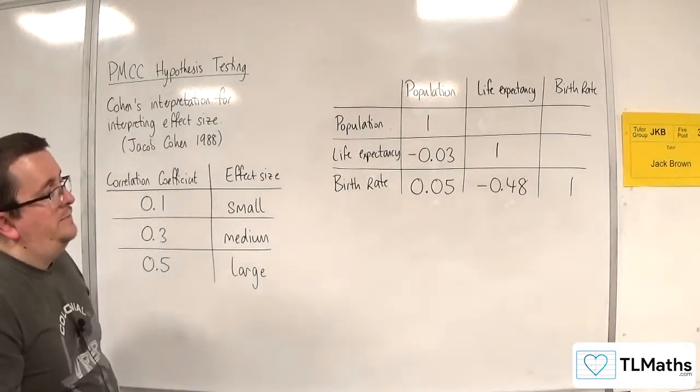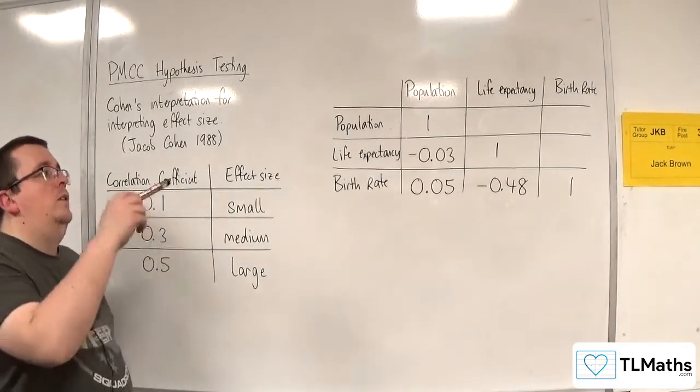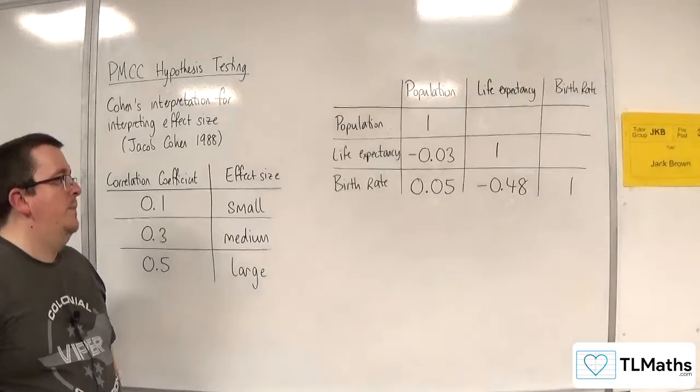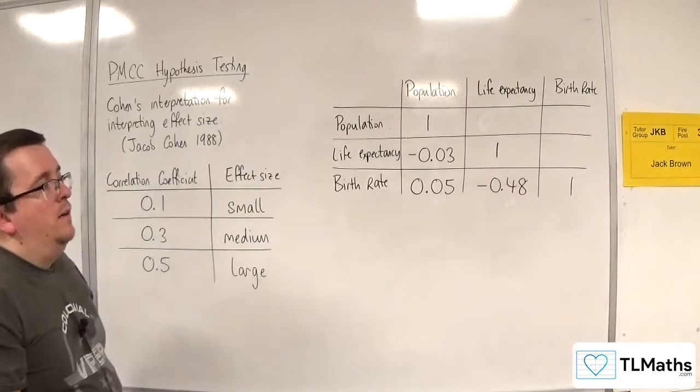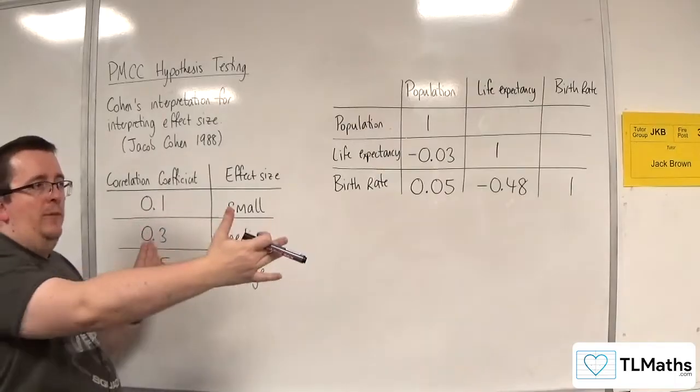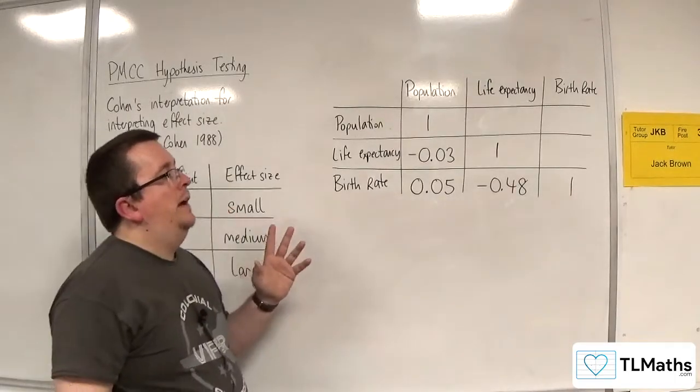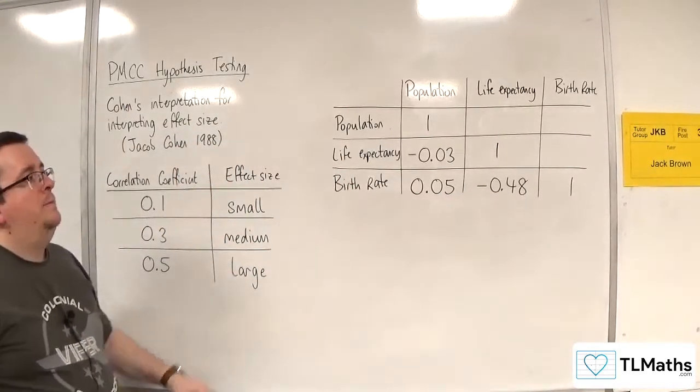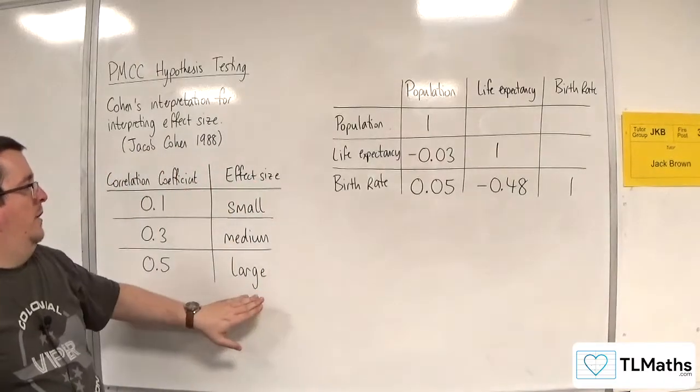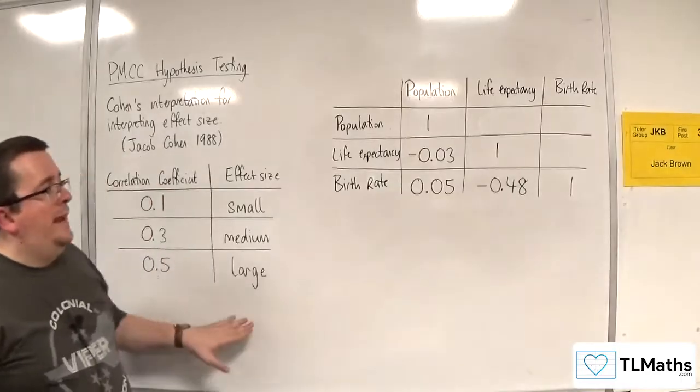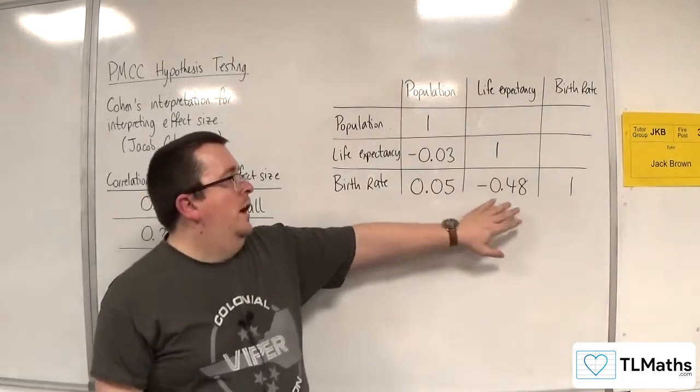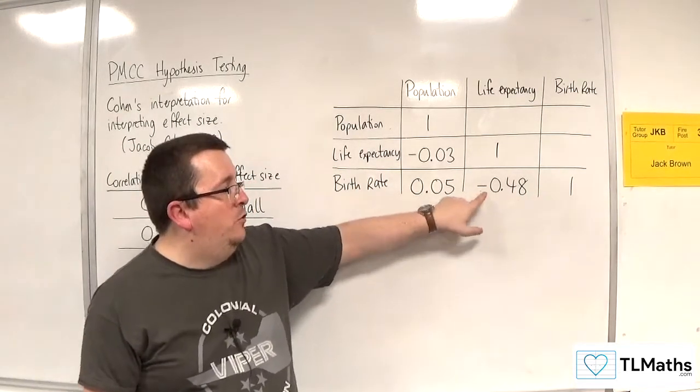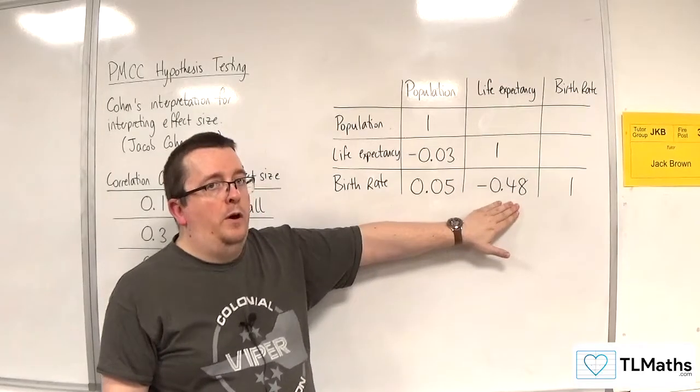And so what we're seeing is that there is a strong negative correlation between the birth rate and life expectancy. So it doesn't need to be, in the case of when we're looking at PMCC levels between minus 1 and 1, that you could interpret it just as it's strong if it's between 0.8 and 1. The fact that you're getting a strong effect size, a large effect size here, is telling you that there is likely to be a strong correlation between the birth rate and life expectancy, strong negative correlation between birth rate and life expectancy in the population.